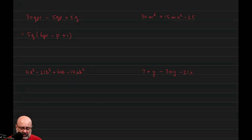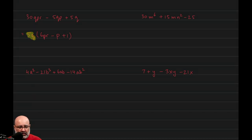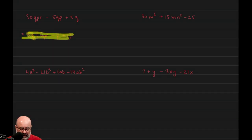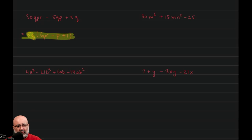Again, if the question just says find the GCF, then 5Q is our answer. If the question says factor out the GCF, then the whole expression is the answer — not just the 5Q, but we need to write everything that you see on the screen right now.